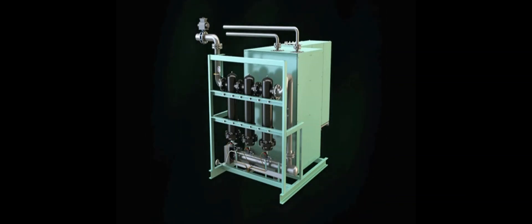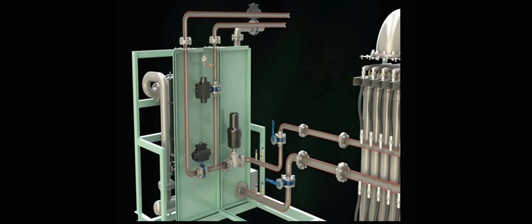A standard skid-mounted system consists of feed air filters, feed air heater, a number of membrane separators, piping, instrumentation, and controls for fully automatic operation.